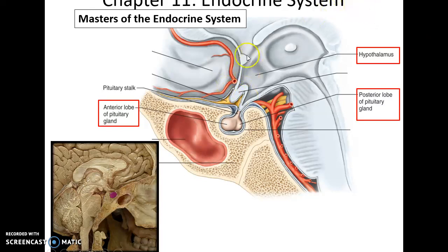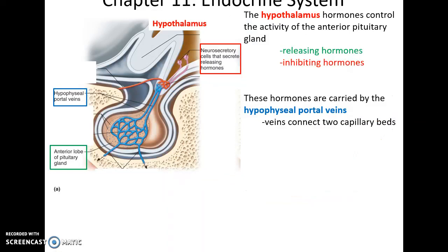The hypothalamus, part of the brain, is the master controller of the endocrine system by controlling the pituitary gland. The pituitary gland has two parts: anterior and posterior lobes. The hypothalamus sends out hormones that control the activity of the anterior pituitary gland — releasing hormones to stimulate it and inhibiting hormones to cause it to stop producing hormones. These hormones travel via the hypophysioportal veins to a separate capillary bed, affecting the anterior lobe. This is called a portal system because you have veins connecting two capillary beds, which is very rare.